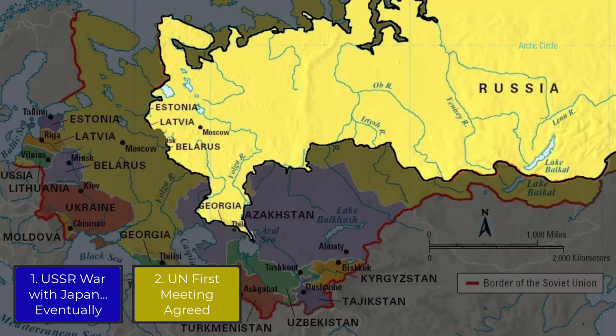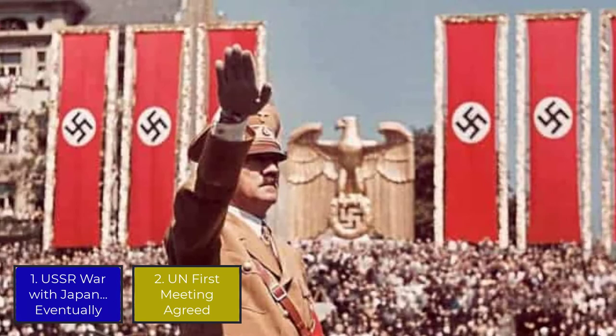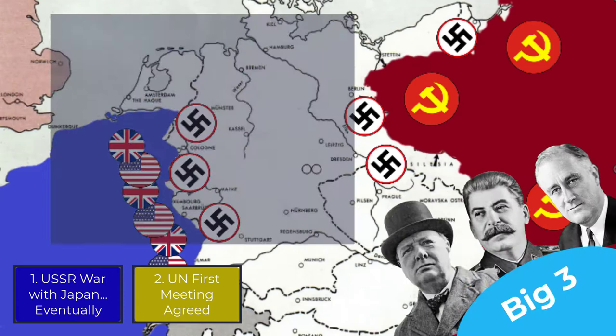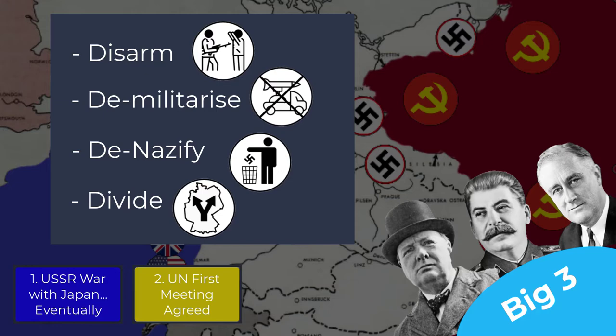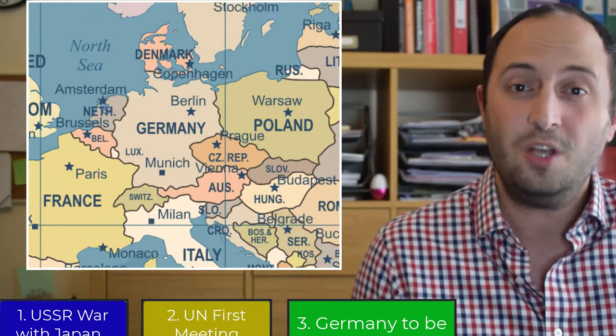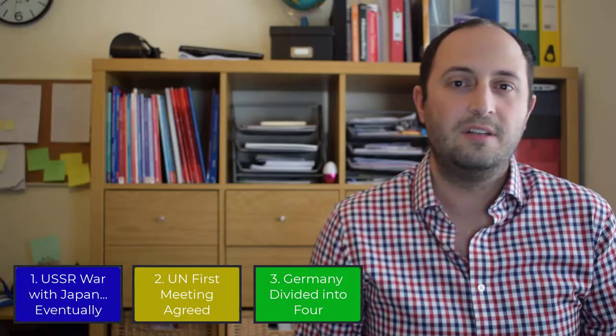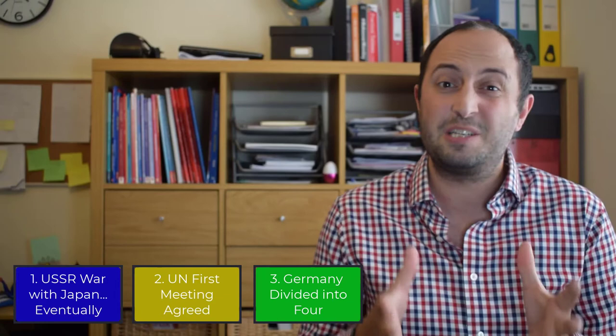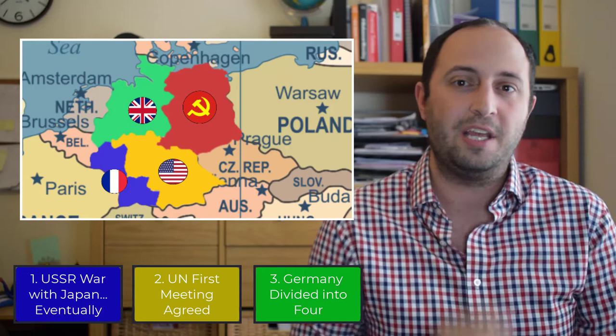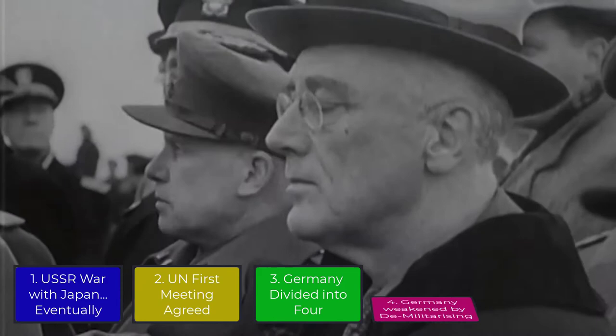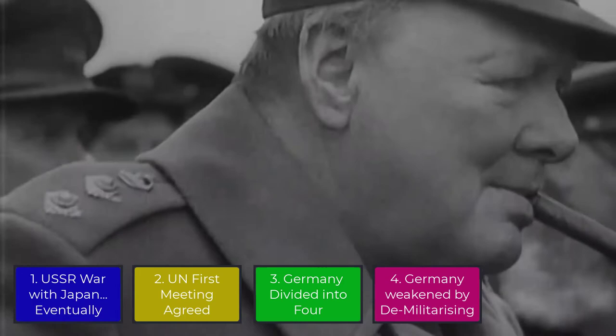Germany was one of the most important parts of the discussion at Yalta because they were so close to defeat. The Allies agreed in principle to disarm, demilitarise, denazify and divide Germany. The key agreement was that Germany would be split into four zones, with each zone controlled by a different nation — one for the USA, one for Britain, one for France and one for the Soviet Union. Many considered this might be the start of the Cold War, as the Allies had agreed that through Germany, Europe would be split between East and West. Reparations were also to be requested from Germany to the tune of 20 billion dollars, with half going to the Soviets for the devastation they had faced.